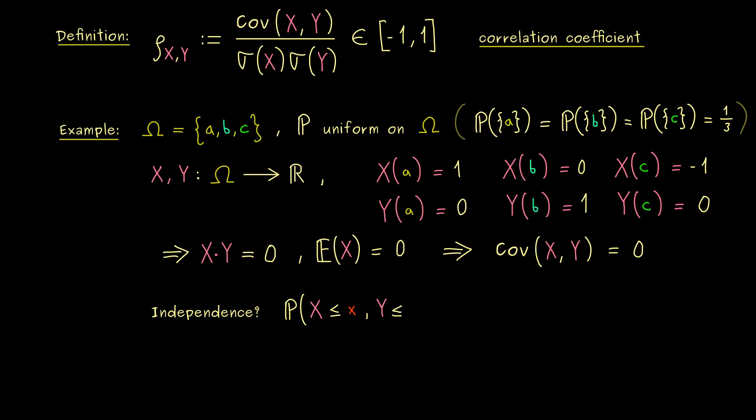More precisely, it means that the probability of this event can be written as a product of two probabilities. Indeed, this is how we have defined independence of random variables. And moreover, it should hold no matter which numbers you choose for lowercase x and lowercase y.